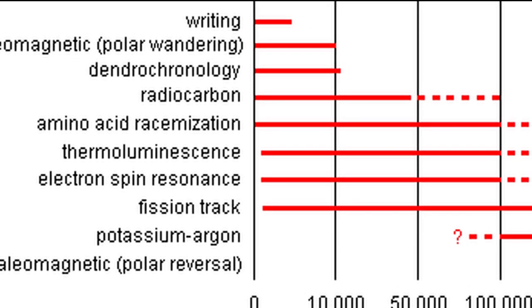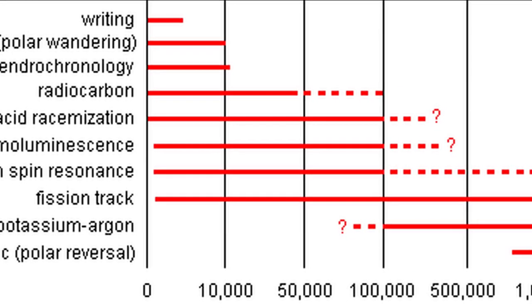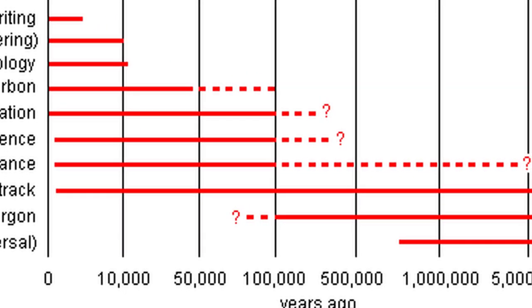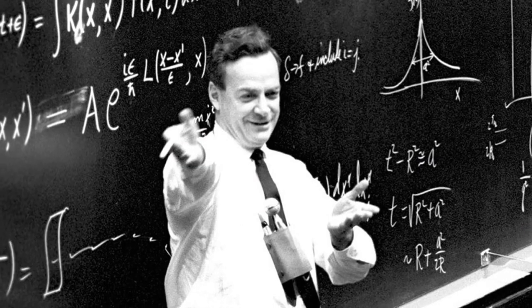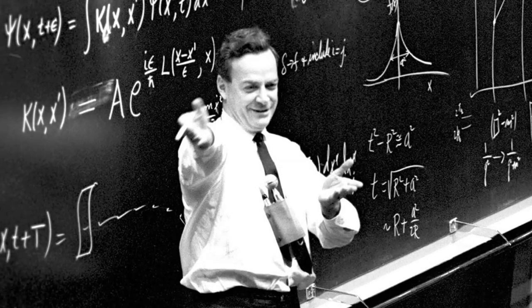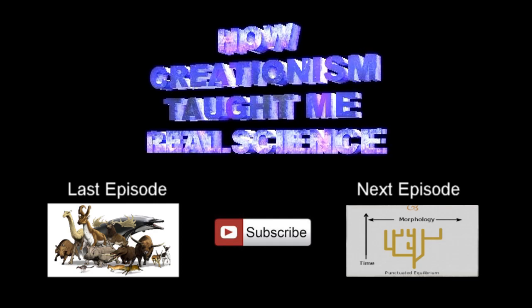Each dating technique has its own set of strengths and weaknesses as well as a means of cross-checking. When comparing multiple readings from multiple methods, we can correct for nearly any anomaly that presents itself. This is why scientists are so confident in their dating methods and the environmental data they produce. They are another example of how creationism taught me real science.